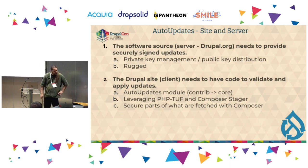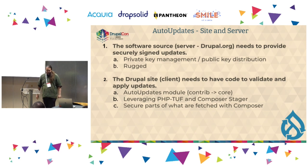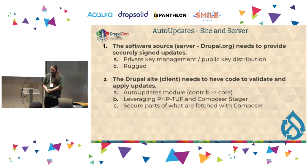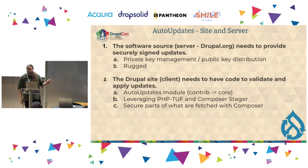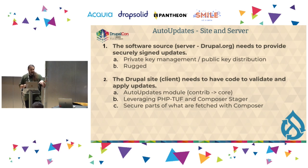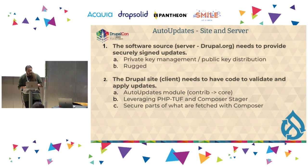Drupal.org, of course, distributes all of the updates for Drupal contrib and core. We need to provide the actual signings so the client can check that. If you're using Composer, your third-party dependencies are probably pinging packages and getting things from GitHub and elsewhere. But all the Drupal components come from a Drupal.org-owned and -managed packages endpoint — packages.drupal.org. This is why we're already the central management point of this and why we're in the right position to insert the signing into our infrastructure.